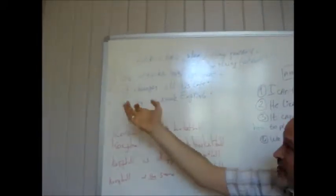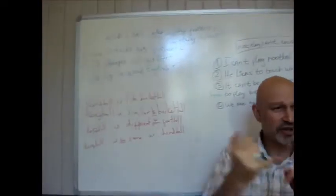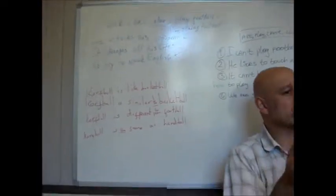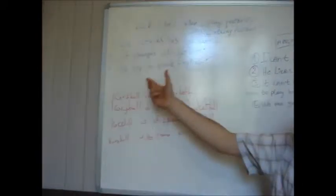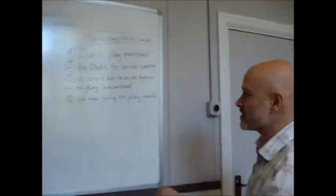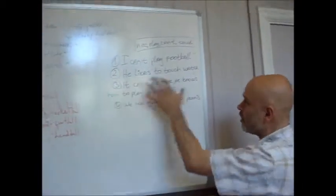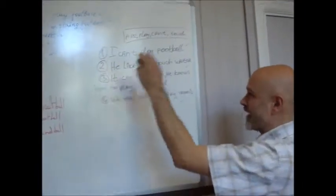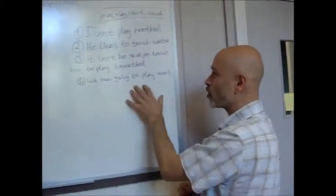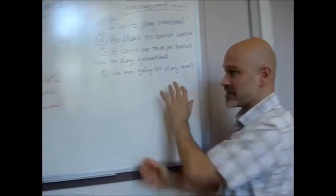It changes all his life. So he, she, it — you need to change the verb. We try to speak English. I can't play football. He likes to touch water. That's a weird sentence. It can't be true. He knows how to play basketball. We are going to play tennis.